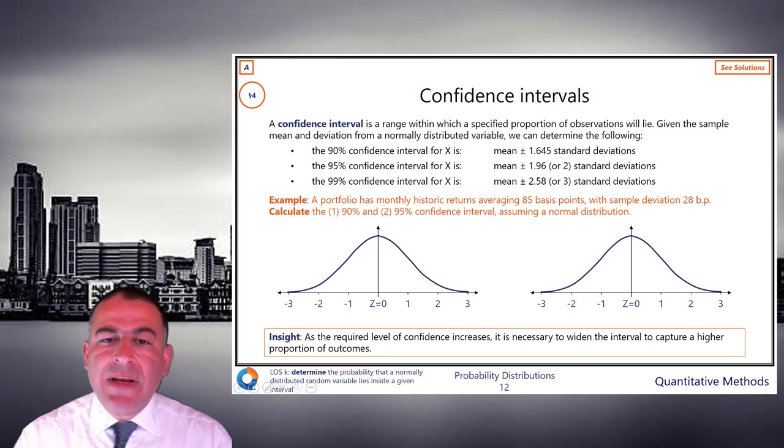Example, a portfolio has monthly historic returns averaging 85 basis points, with sample deviation 28 basis points. BP means basis points. It means 0.01%. So 85 basis points is 0.85%. We'll do that in fixed income.